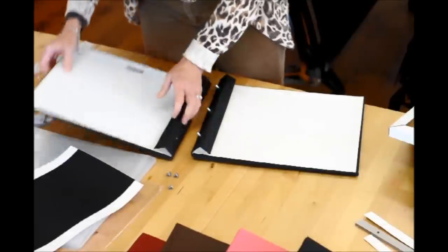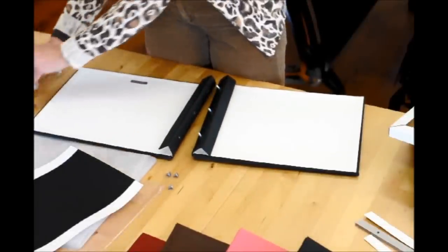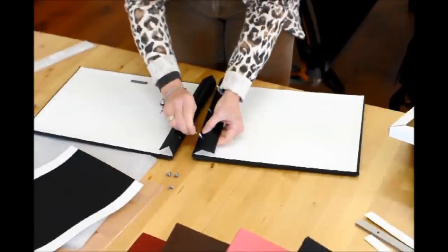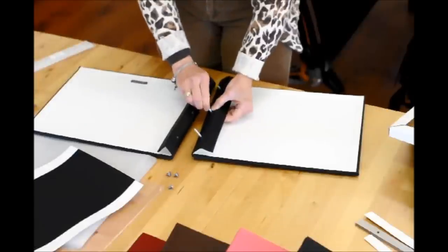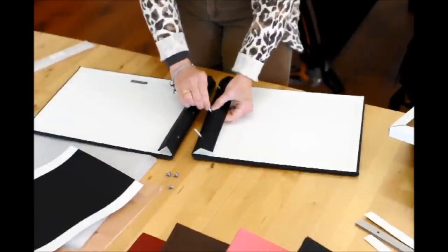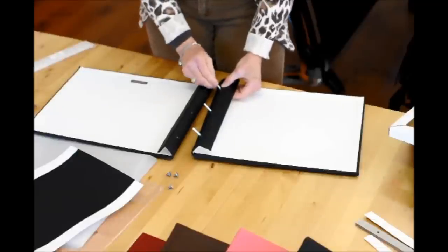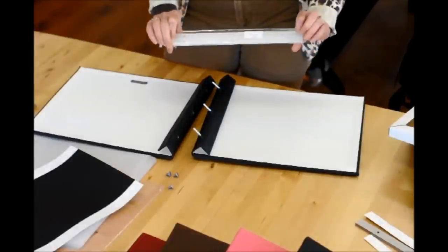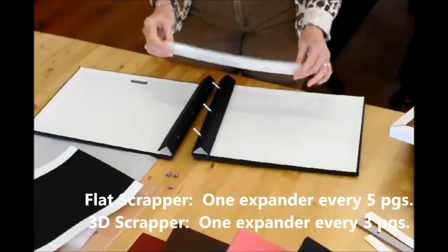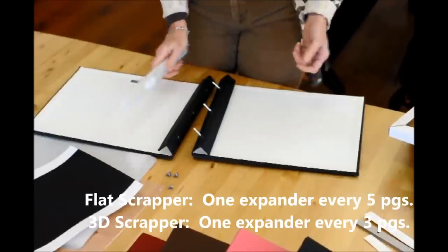Now, once that's done, I'm going to use three half-inch posts, and another question I like to ask my customers is whether or not they're a flat scrapper or a 3D scrapper. What that means is, if you like to add embellishments like chipboard and paper flowers, buttons and flip flaps, we all love flip flaps, then I would want to put a spine expander one every three pages. If you're a flat scrapper, I'm just going to do it about one every five pages.